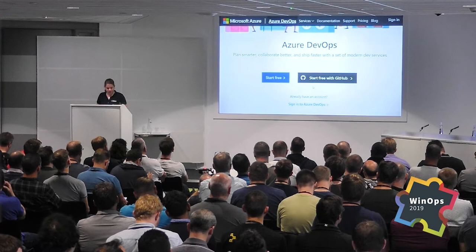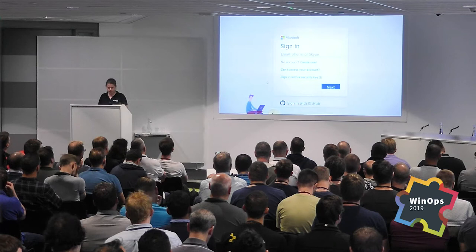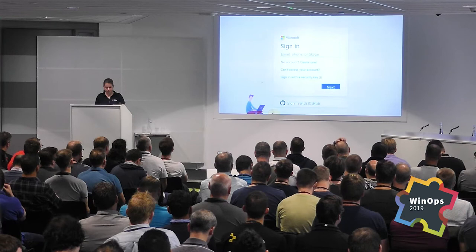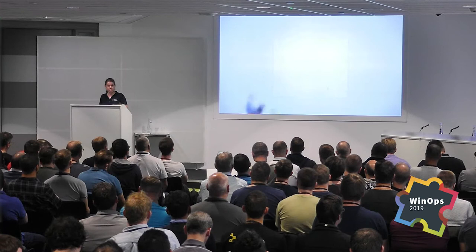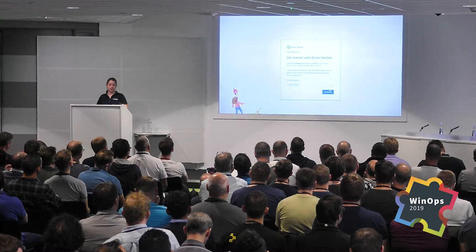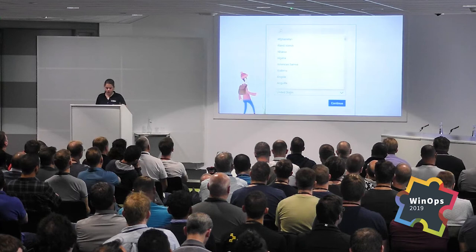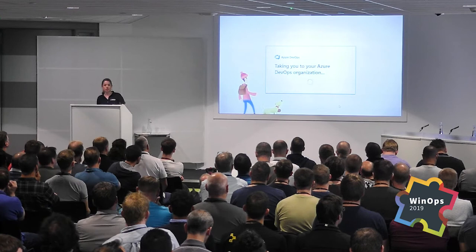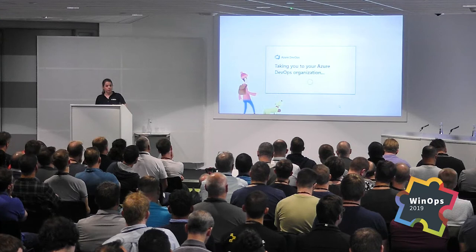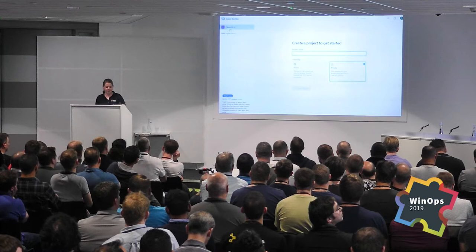The first button you'll see is 'Start free' or 'Start free with GitHub.' You get a typical Azure sign-in screen where you can sign in with an Office 365 account, a personal Microsoft account, or your GitHub account. It asks where you're located, and then it builds your Azure DevOps organization. This is free — no credit cards, no issues. Here I have a project already — you can create a project, choose whether it's private or public. Public means the whole world can see it; private is just for your company with permissions.